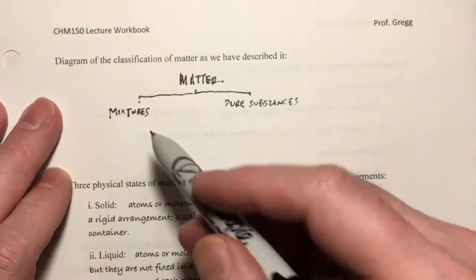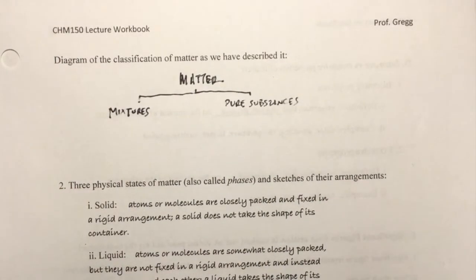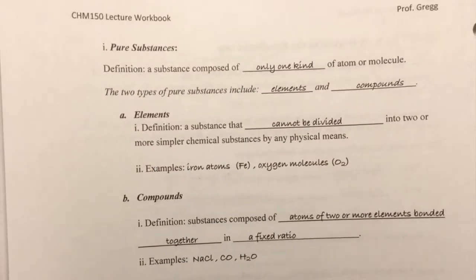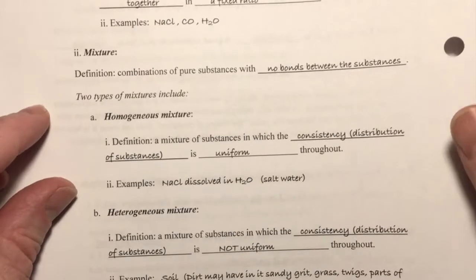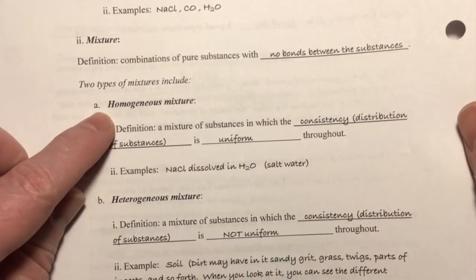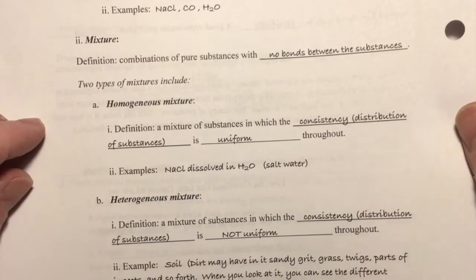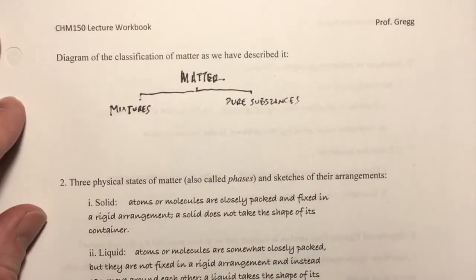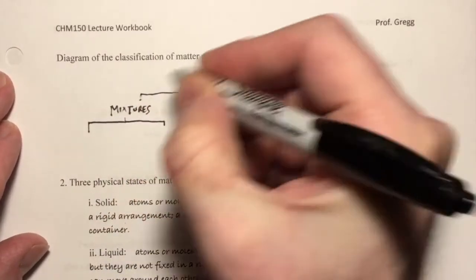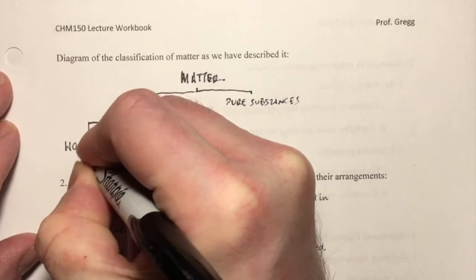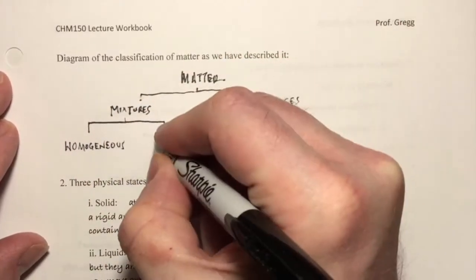Okay, we're going to further subdivide these categories. Mixtures, if we turn to page 6, we see that mixtures are made up of two types of mixtures. There's homogeneous and heterogeneous. So homogeneous and heterogeneous are the two mixture types. So we'll divide that two more times: homogeneous and heterogeneous.